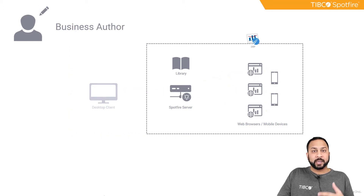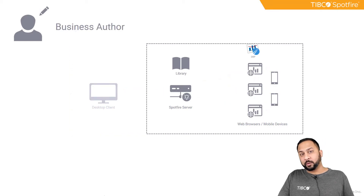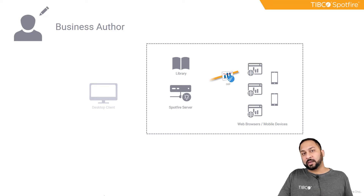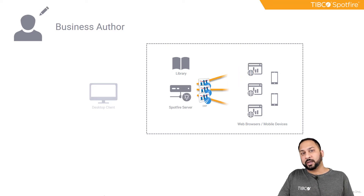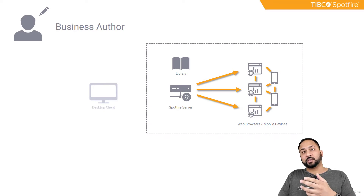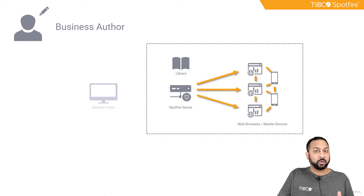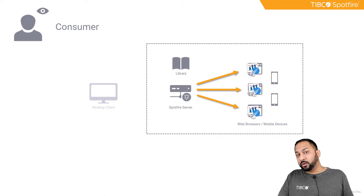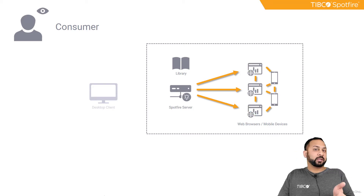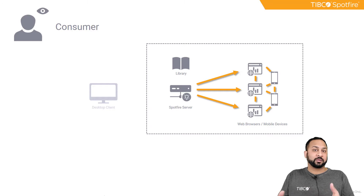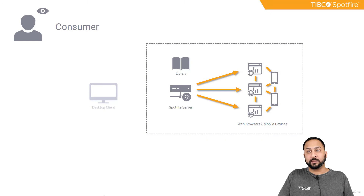The business user can create DXPs right from the web browser and save them to the library as well. A business author can create and modify DXPs and share them with others, or just access DXPs created by others. The consumer is the read-only version — they can look at DXPs they have access to and interact with them on mobile devices and web browsers, but they just can't edit them. It's just for consuming and reading.